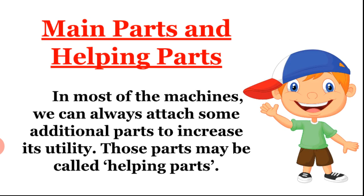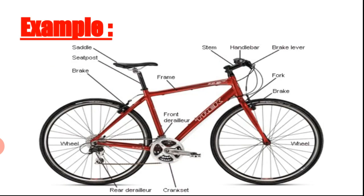In most machines, we can always attach some additional parts to increase its utility. Those parts may be called helping parts. For example, in a bicycle, the main parts necessary to move it are the handle, pedal, and wheels, while its additional parts are a bell, a basket, and a seat cover.